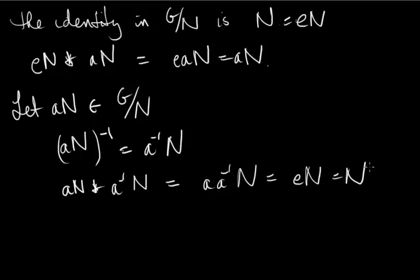So we have inverses, the identity, and associativity, and we're done. We showed the group axioms, and first showed that star was well defined. Therefore the factor group — or quotient group as it's sometimes called — G mod N is a group. It is a non-empty set with an operation star; star is a binary operation and the group axioms all hold.